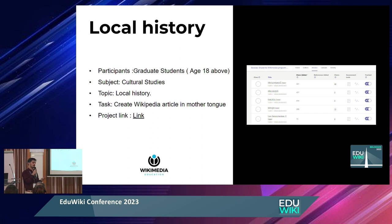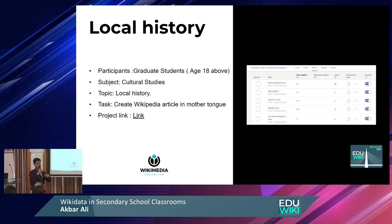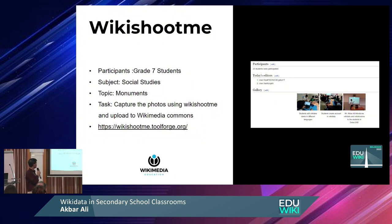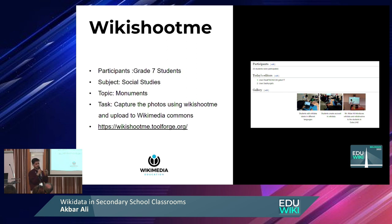Students also received assignments to create local history articles as part of their subjects, writing Wikipedia articles — all as part of day-to-day classroom activities, not separate assignments. In another experiment in Dubai, students used the WikiShootMe tool to capture photos of their locality and local towns, then uploaded those photos to Wikimedia Commons.